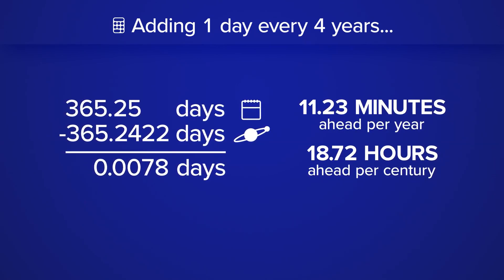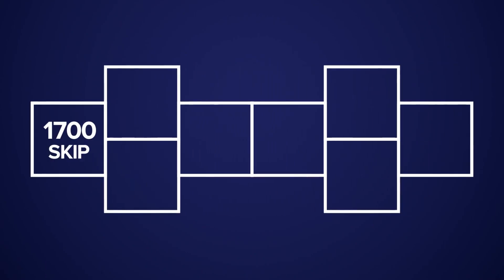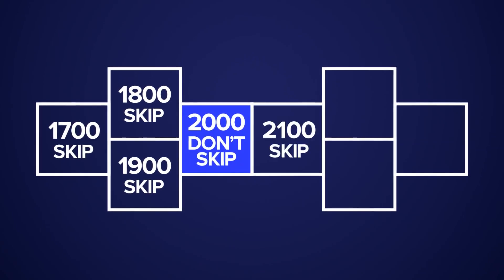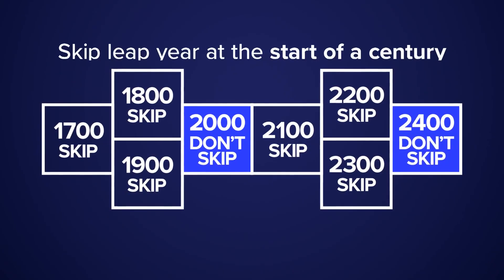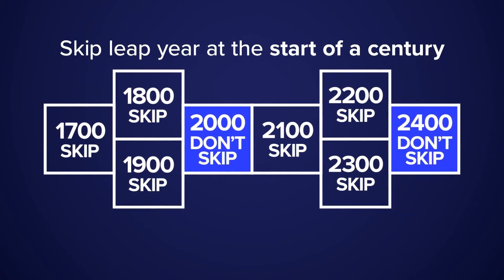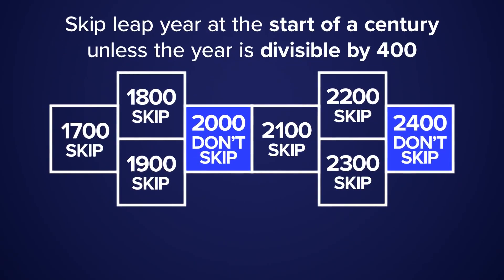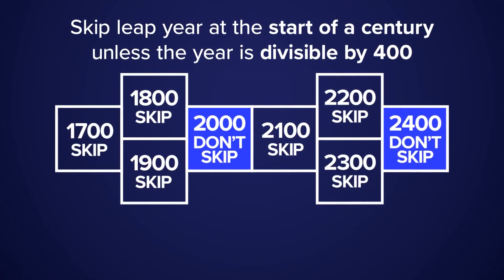So to help bring this number closer to zero, we actually skip leap years to help realign the calendar to the solar year. But the rules are very specific. We'll use a kind of leap year hopscotch to solve the problem: you skip a leap year if it falls on the start of a century, unless that year is divisible by 400.